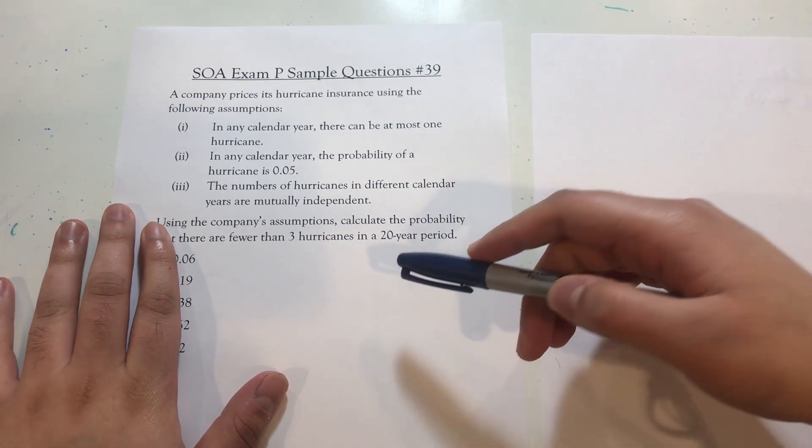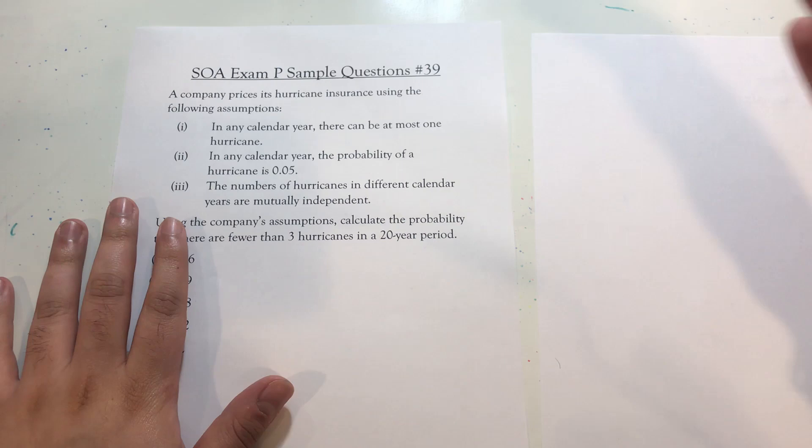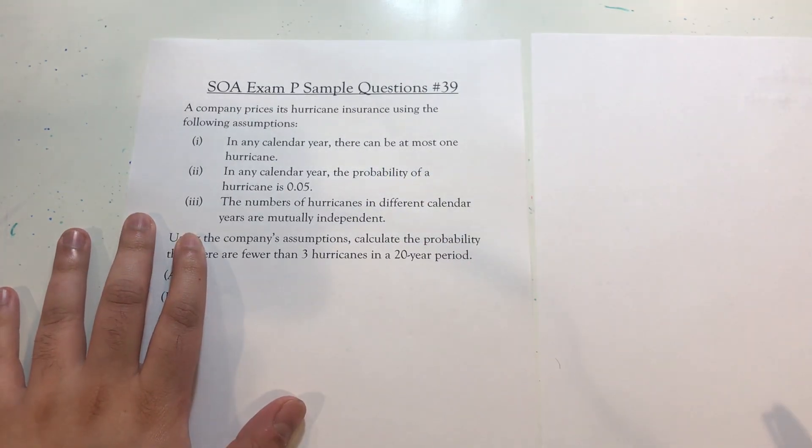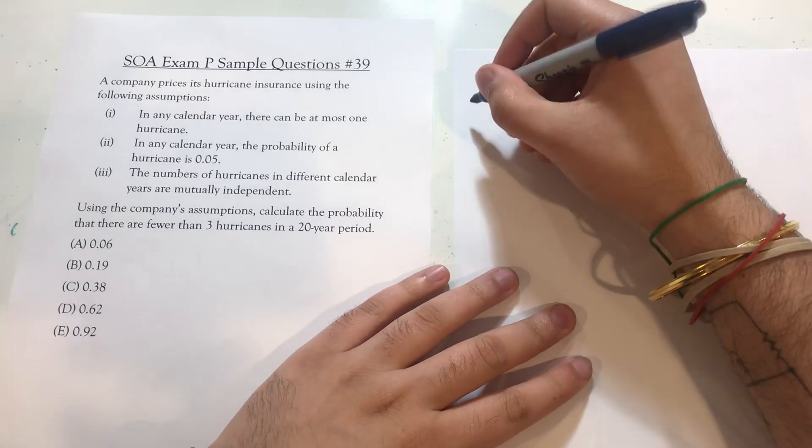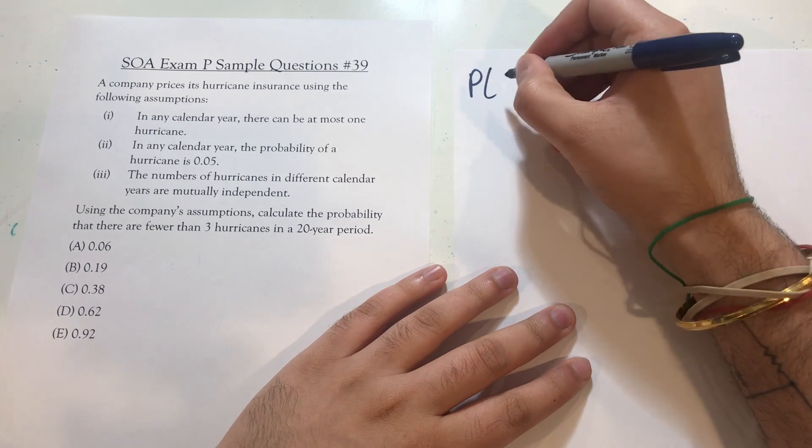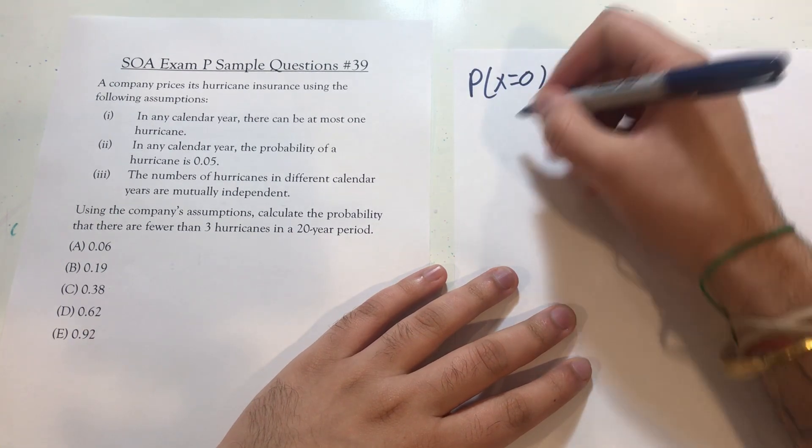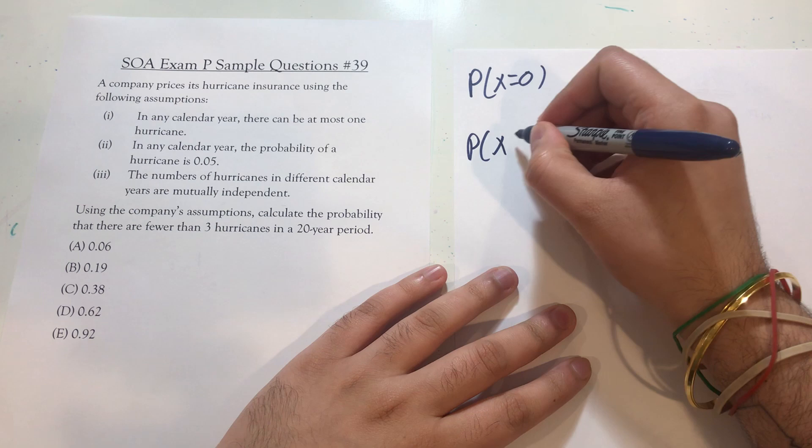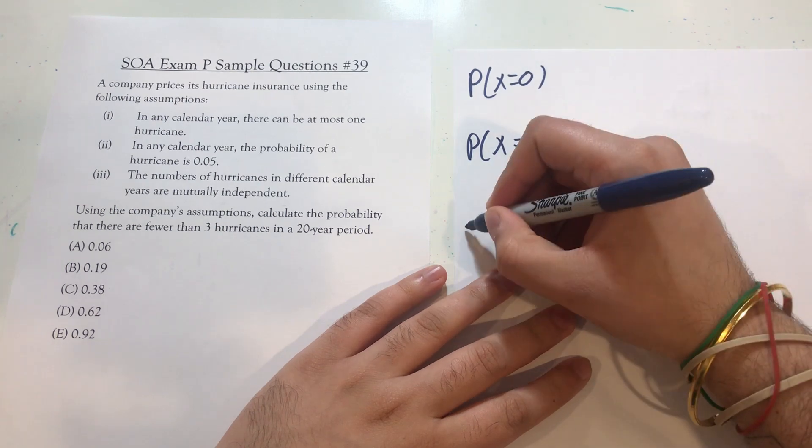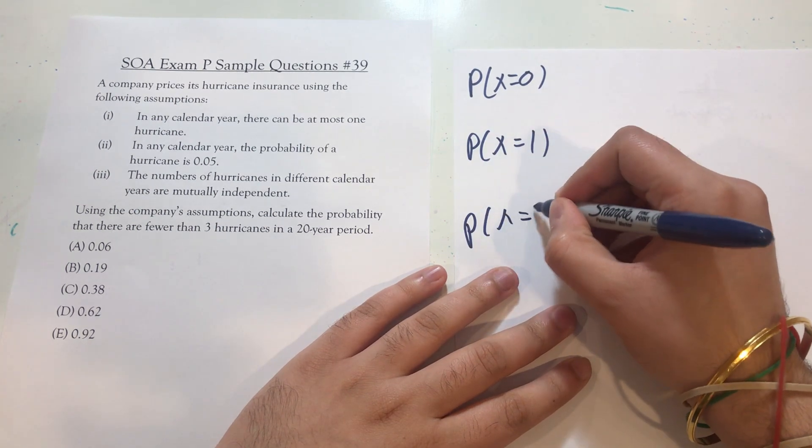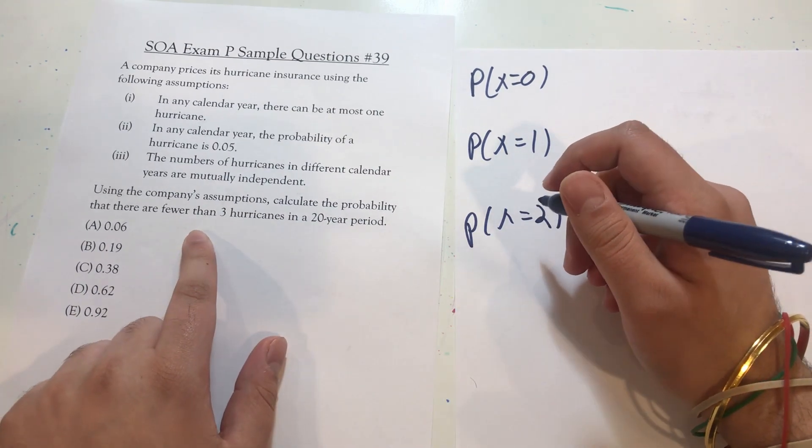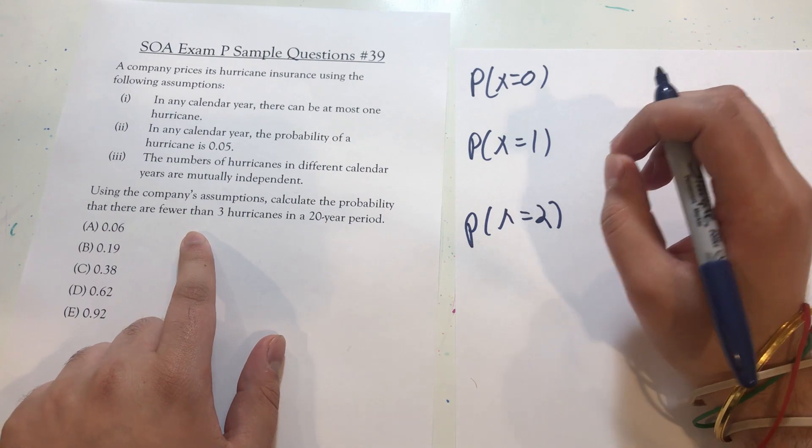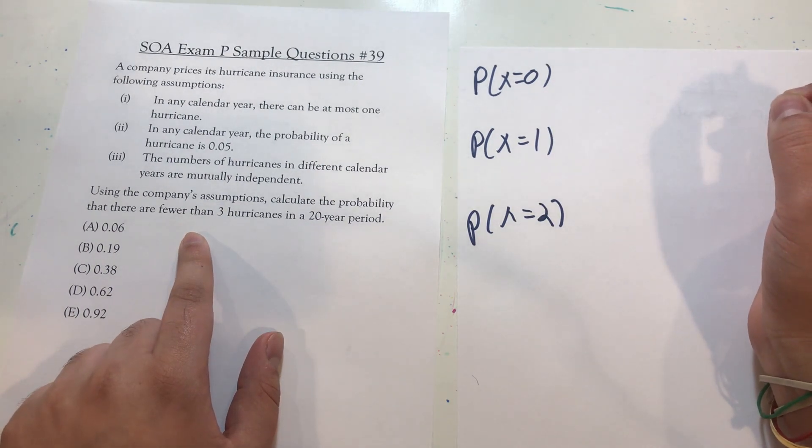You have a fixed number of trials, 20. You have the same probability with each trial, 0.05. So we're looking for the probability that there are fewer than three hurricanes. So it's going to be the sum of a few different probabilities. The probability that there is exactly zero plus the probability that there are exactly one hurricane plus the probability that there are exactly two hurricanes, but not the probability that there are exactly three because we specified fewer than three hurricanes. Three is not fewer than three.